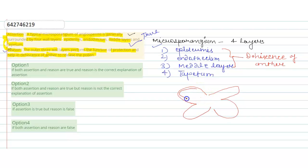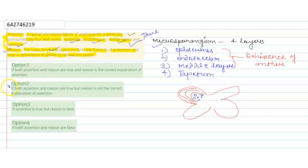This is the sort of structure of the anther, in which four wall layers are present and the smaller pollen grains are present inside. In the reason, only the function of three layers is explained, whereas in the assertion, four layers are mentioned: epidermis, endothecium, middle layer, and tapetum.